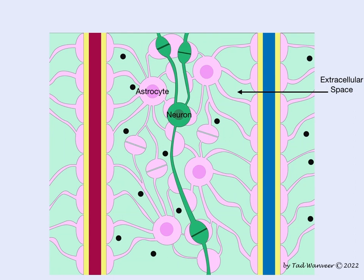The bold red and blue lines represent vasculature — red represents arterial inflow and blue represents venous outflow. The blood vessels are encased in astrocyte end feet, and the astrocyte end feet leave a little space in between the inner surface of the end foot and the outer surface of the blood vessels, creating what's known as a perivascular space.